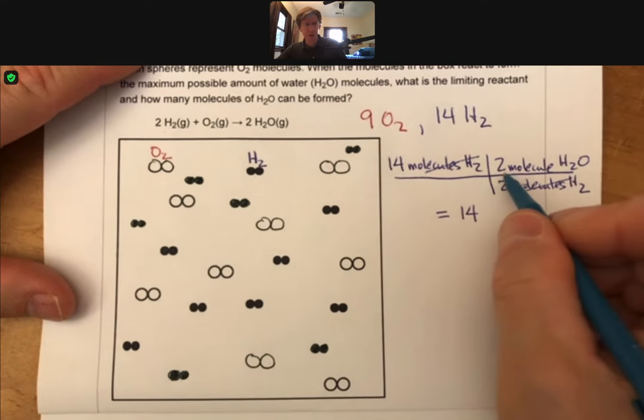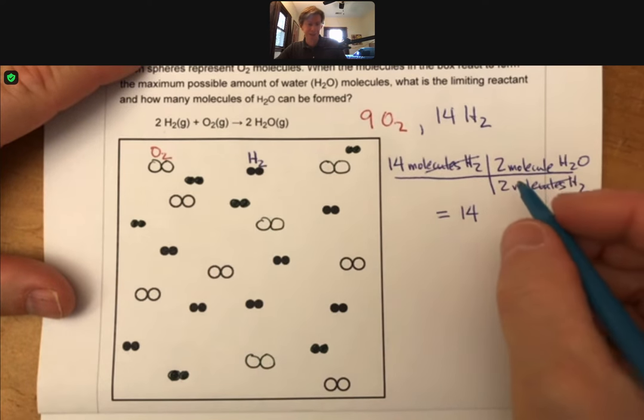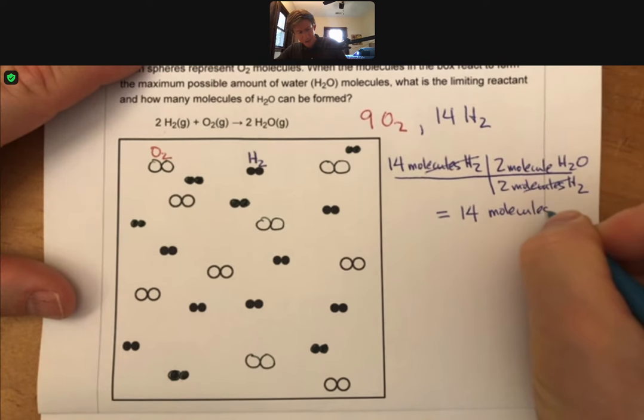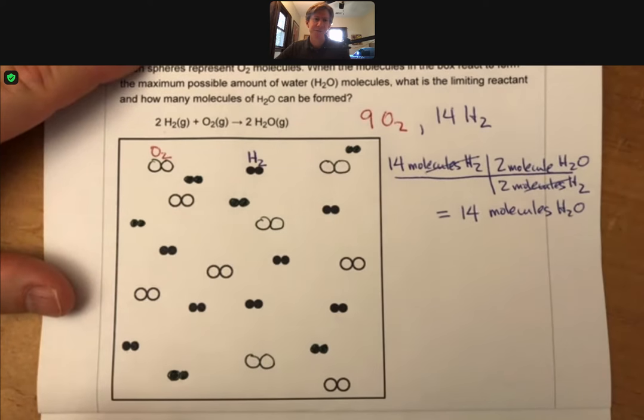We're still using the coefficients from the balanced reaction, and we still cancel our units. And now we still multiply and divide, and if you do, you'll get 14 molecules H2O if hydrogen H2 is the limiting reactant.